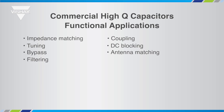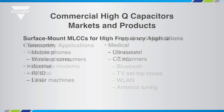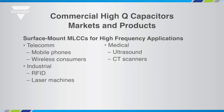Due to their low cost, High Q and Ultra High Q commodity series are mainly targeted for mobile phones, wireless modems, RFID transmitters and receivers, GPS, Bluetooth, set-top boxes, WLAN, etc. The noble metal series is intended for higher quality applications including medical instrumentation, laser machines, etc.